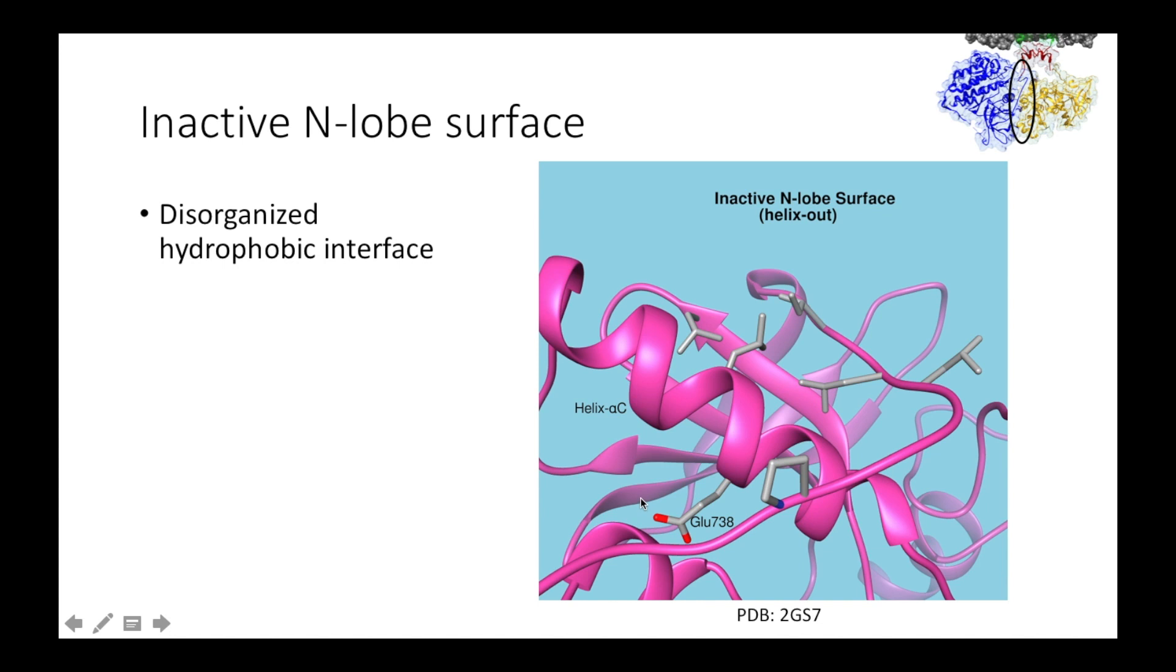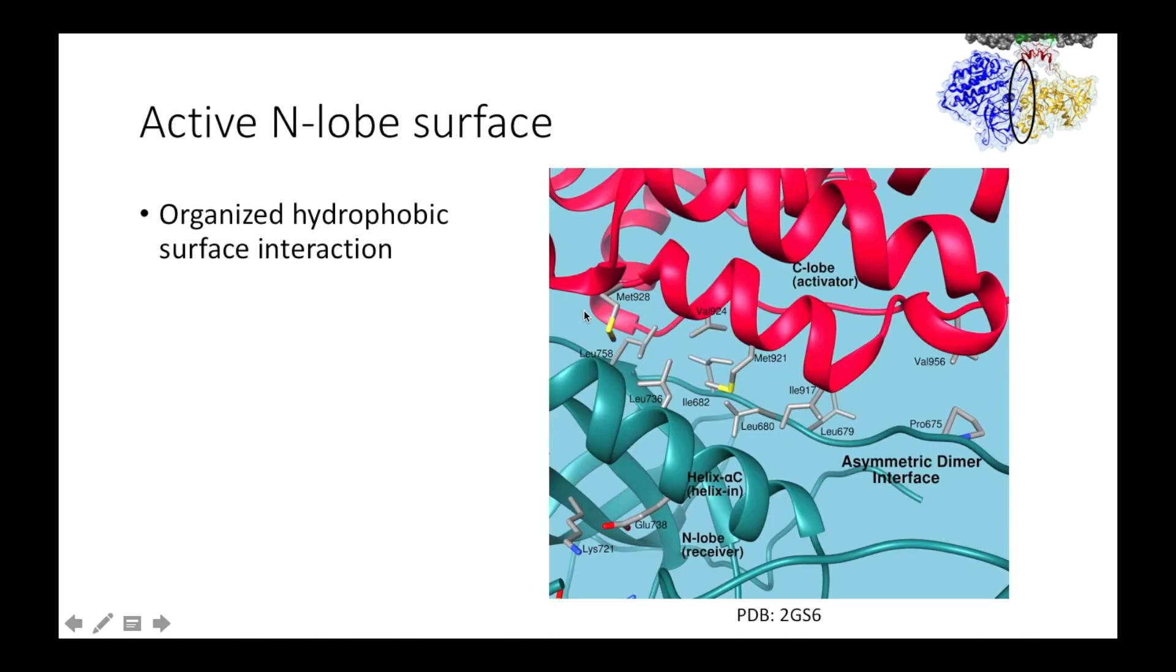Next, I'm going to show the same surface in the activated kinase dimer. Here is helix alpha-C and the N-lobe of the activated kinase. And here is the C-lobe of the activator. You can see the hydrophobic residues of the active C-lobe have helped organize the hydrophobic surface of the activated N-lobe. This, in turn, pushes the helix alpha-C inwards, helping activate the kinase.